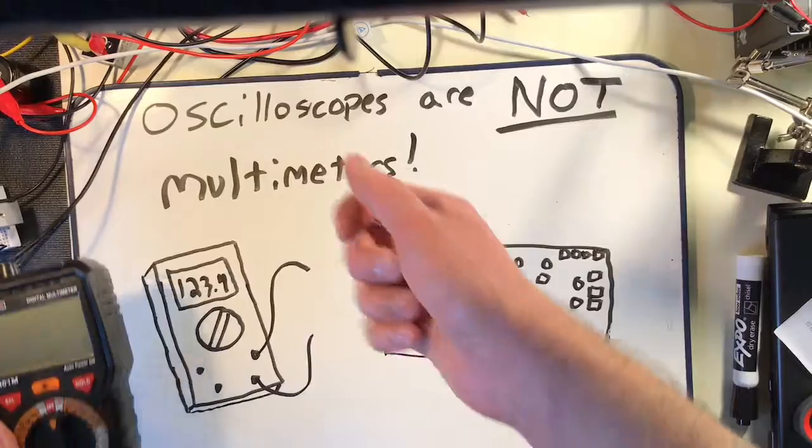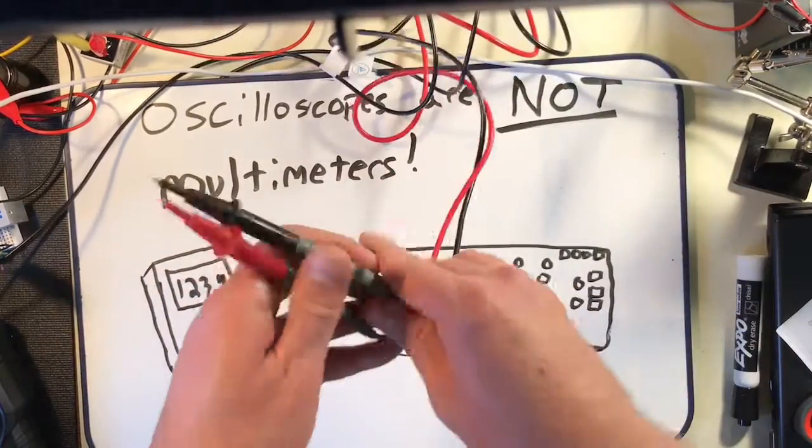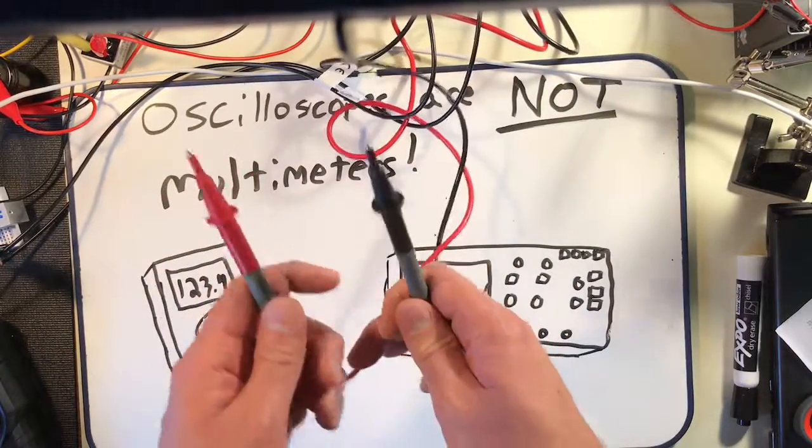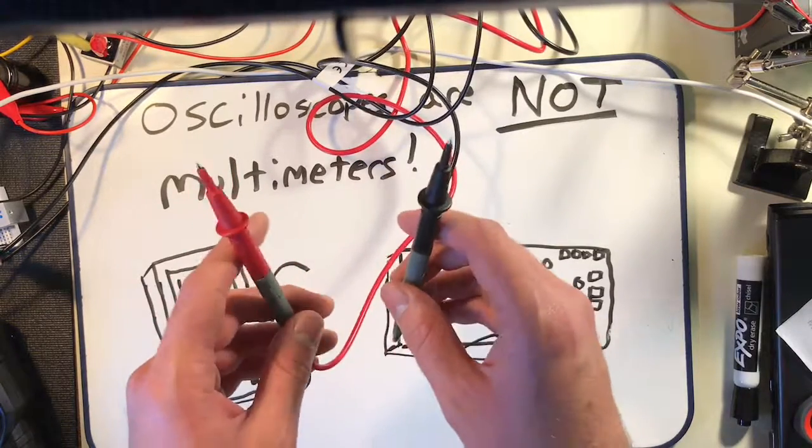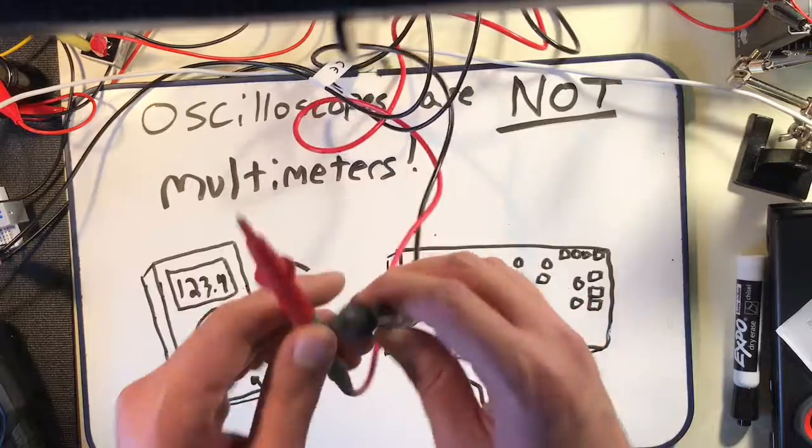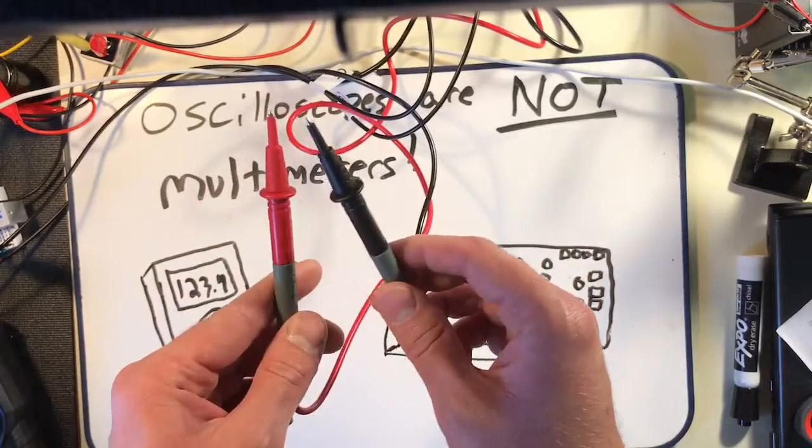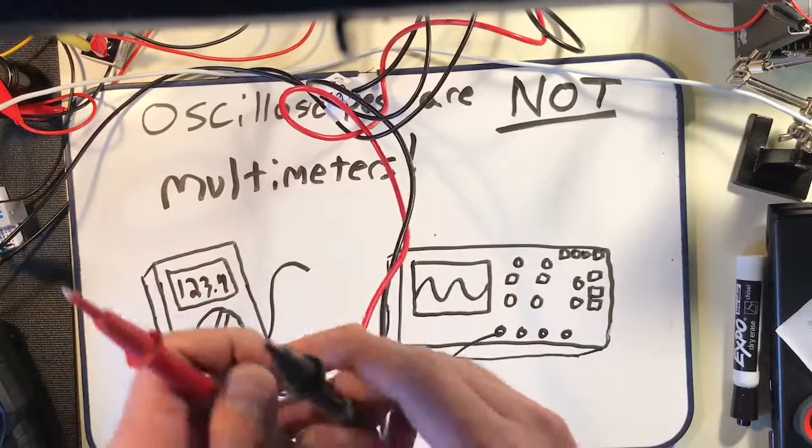Also, the leads for this, the positive and negative leads, have a very high resistance and impedance between them. So when you take your probes for your multimeter, whatever you connect them to, even if there's a very high potential between them, there's not very much current that's going to flow through these probes. And that's good.